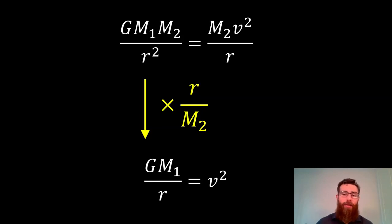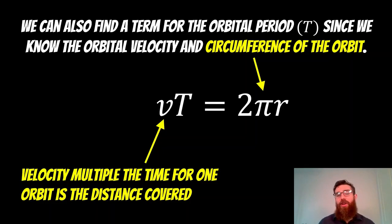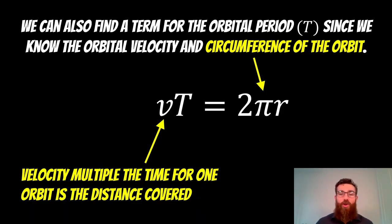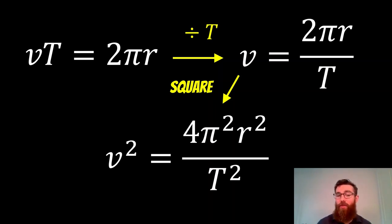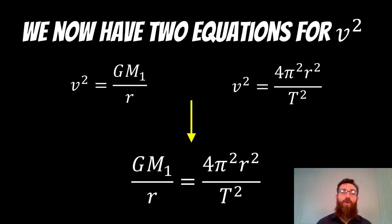That's important for when we get a bit further down. We can also find a term for the orbital period. We know the orbital velocity and the circumference of the orbit, so we can introduce the orbital period T. If we divide by T, we have it in terms of velocity: V equals 2πR over T. Squaring that gives a new equation for velocity squared, and we can equate the two expressions to remove V.